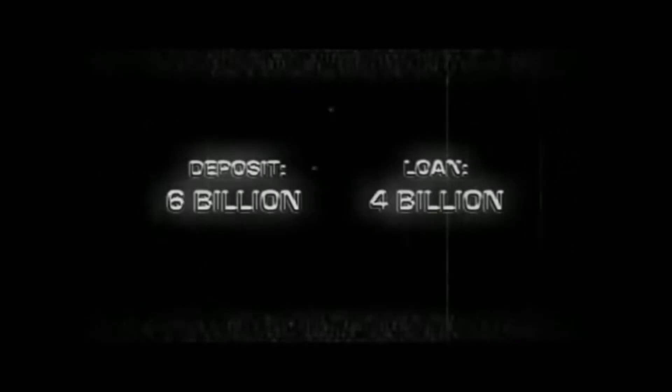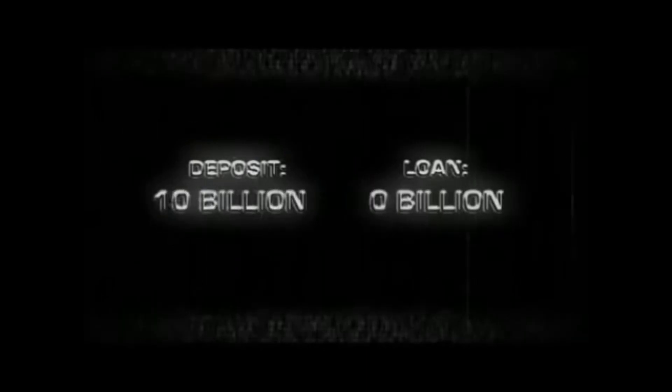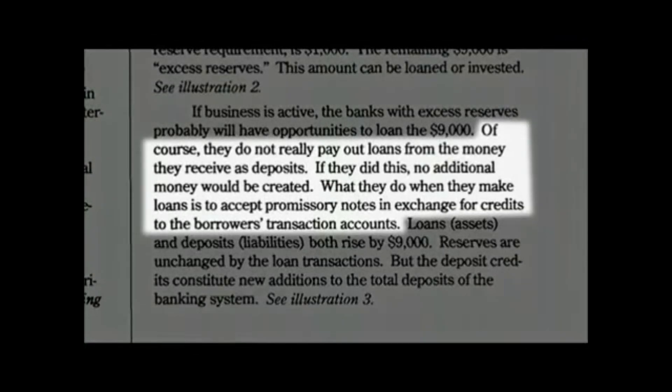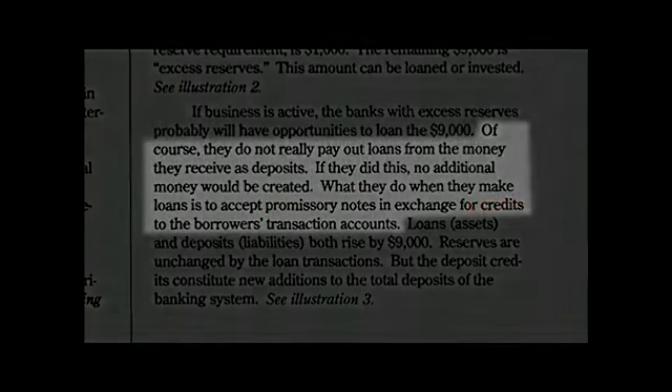Now, it is logical to assume that this $9 billion is literally coming out of the existing $10 billion deposit. However, this is actually not the case. What really happens is that the $9 billion is simply created out of thin air on top of the existing $10 billion deposit. This is how the money supply is expanded. As stated in Modern Money Mechanics, the banks do not really pay out loans from the money they receive as deposits. If they did this, no additional money would be created. What they do when they make loans is to accept promissory notes in exchange for credits to the borrower's transaction accounts. In other words, the $9 billion can be created out of nothing simply because there is a demand for such a loan and there is a $10 billion deposit to satisfy the reserve requirements.